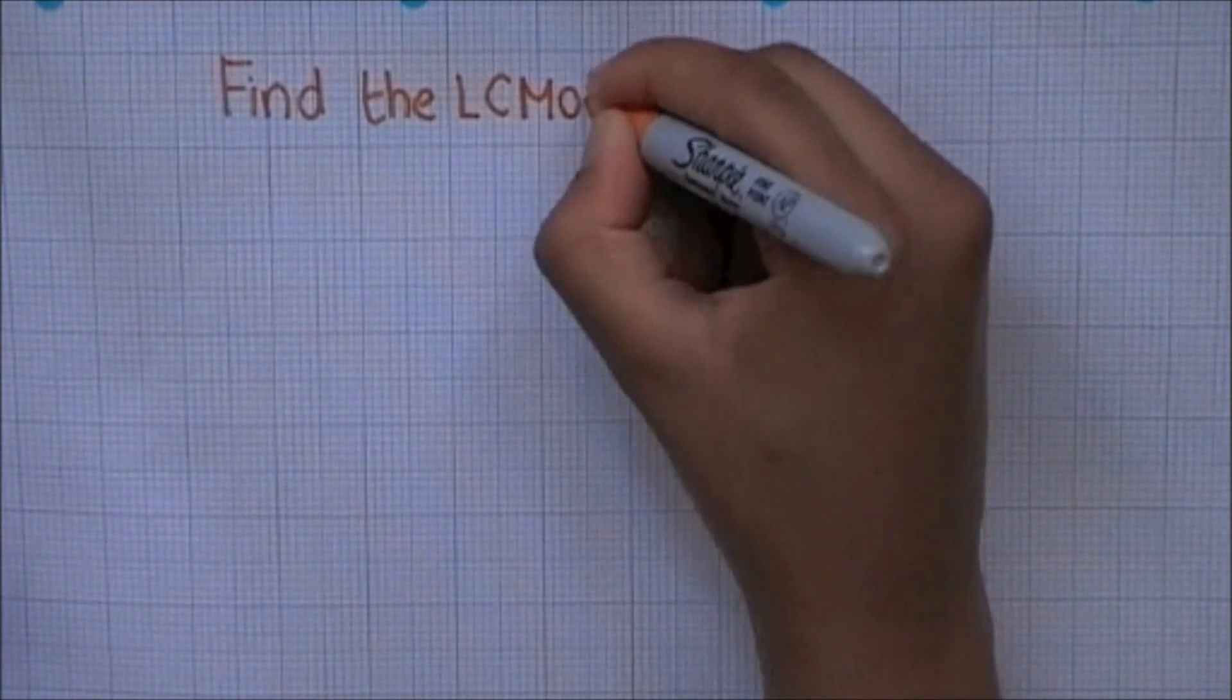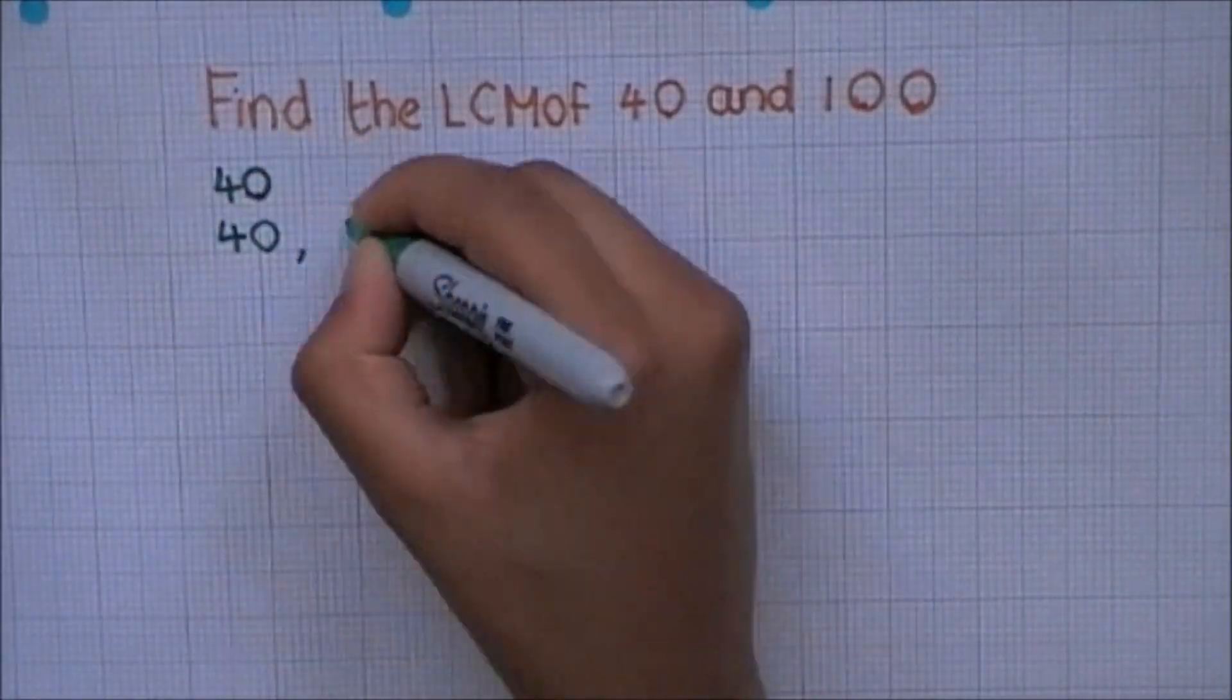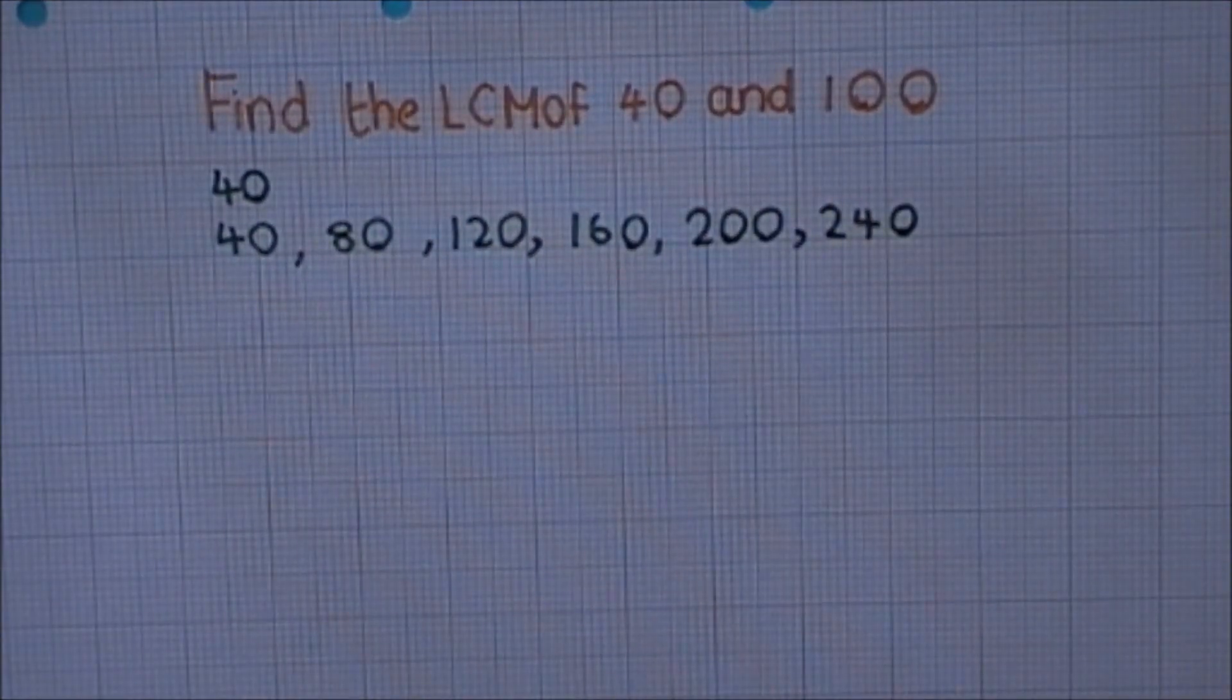Anyway, let's use the same numbers and find their LCM. First, let's write out some multiples of 40. 40, 80, 120, 160, 200, 240.